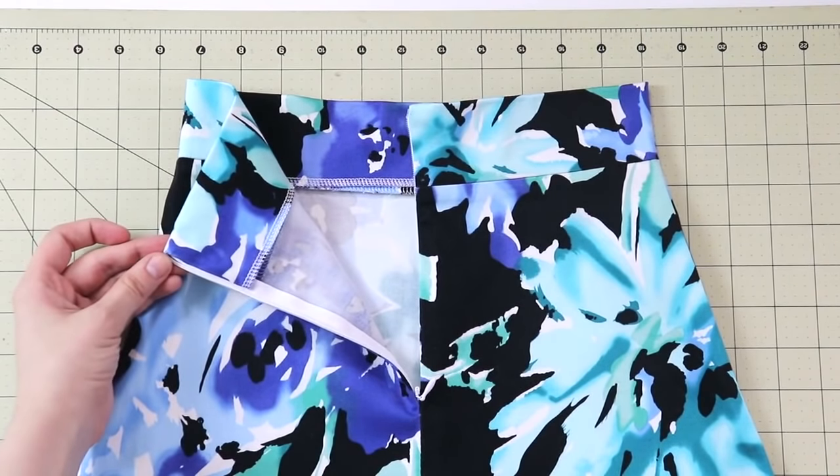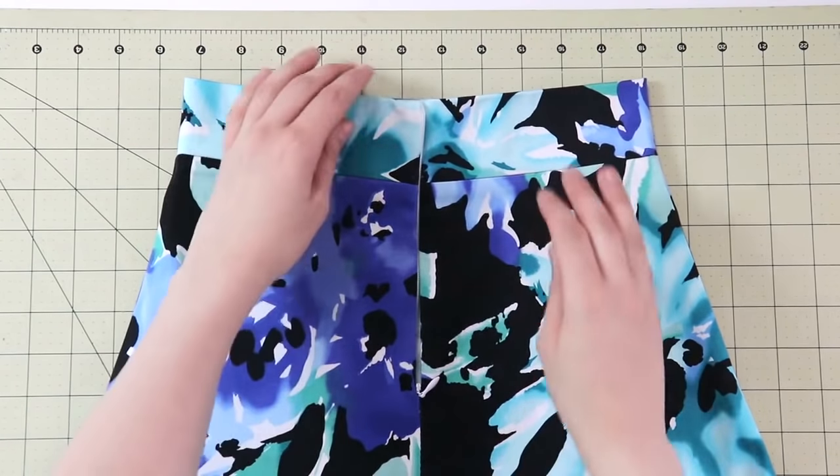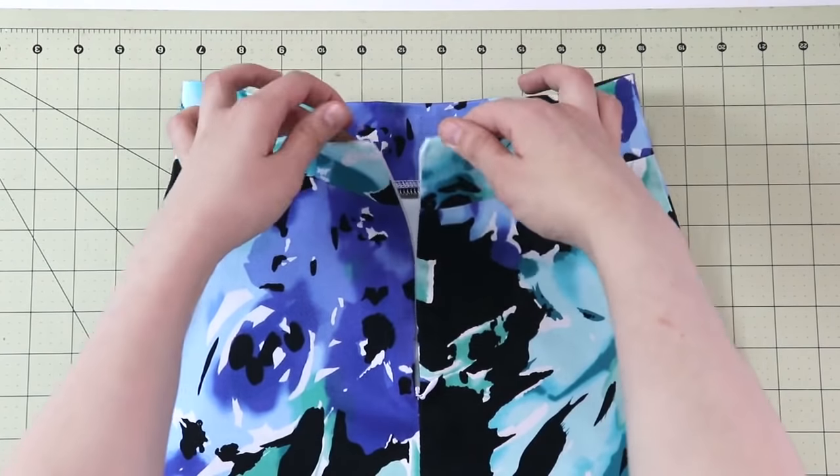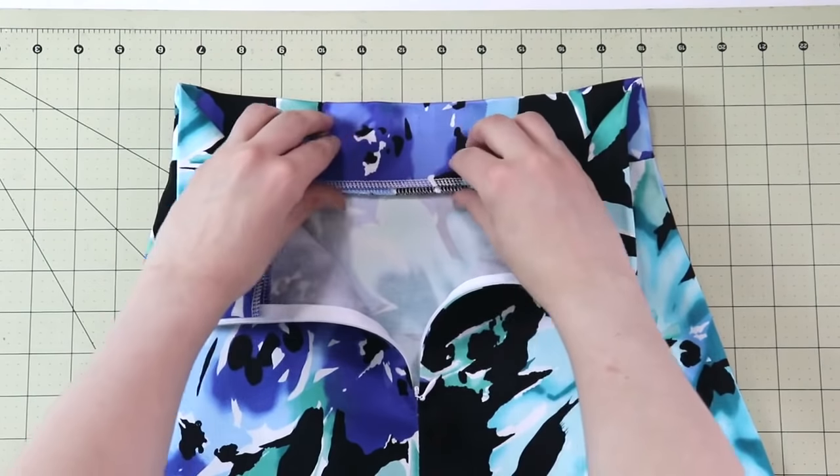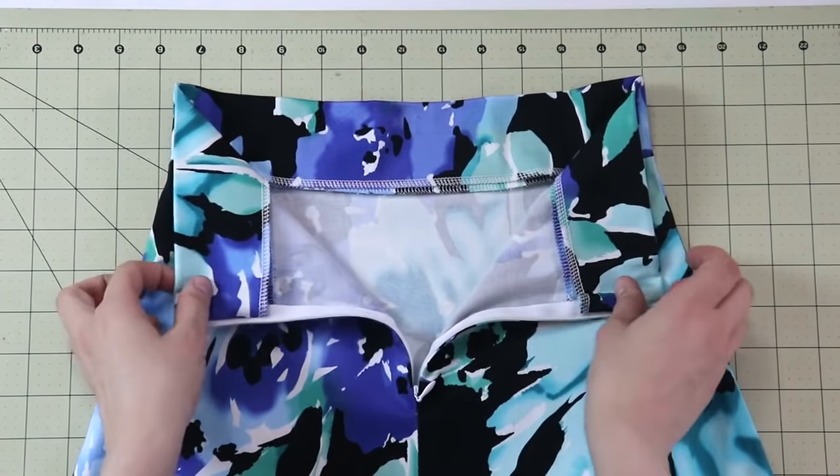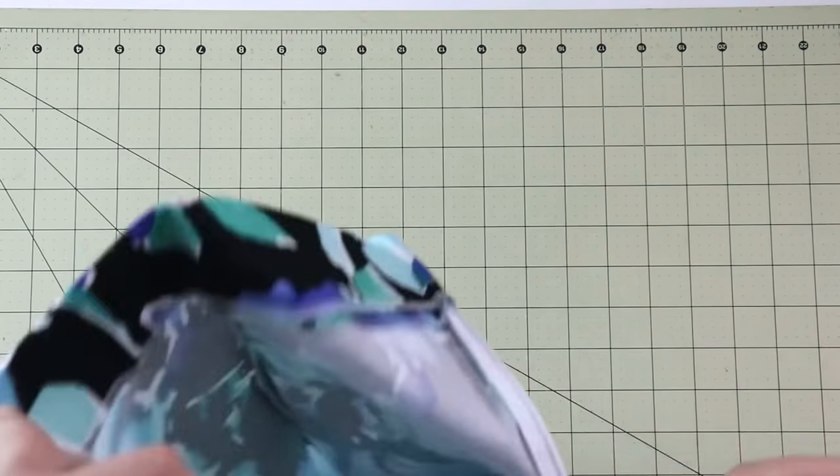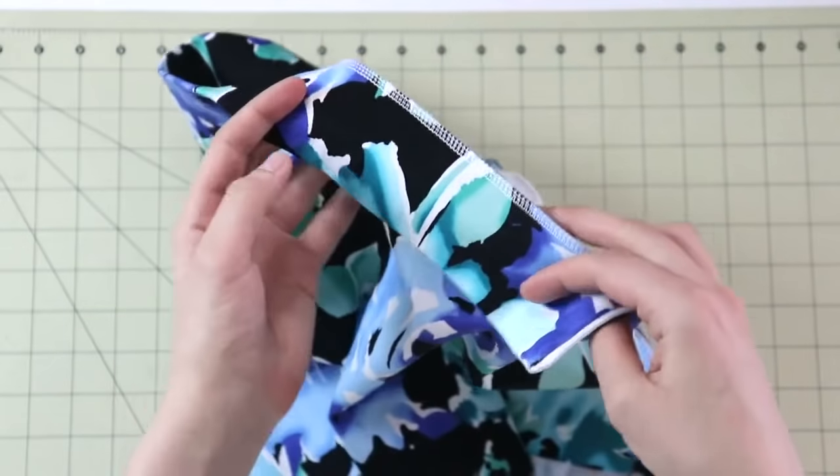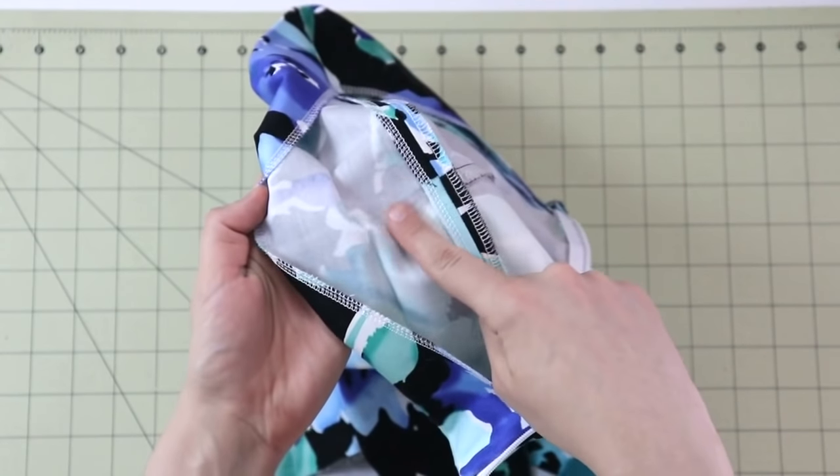And the last thing that we need to do is to actually finish the waistband, and we're going to do that in the following steps. Now this is how it looks on the inside. I have my seam allowance pressed open, the one that connects the waistband and the body of the skirt. And then I have the waistband backside that goes over that seam allowance, but it's not yet attached.